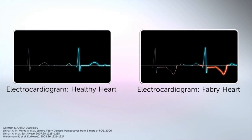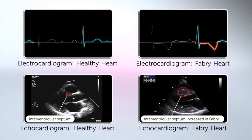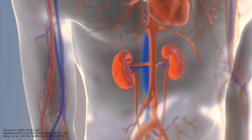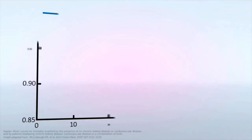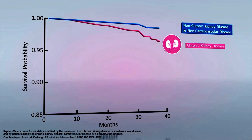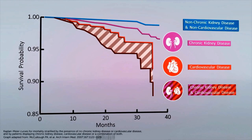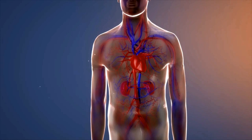Fabry disease also affects the kidneys, as GB3 accumulates in the renal glomerulus, causing progressive deterioration of renal function and ESRD. This in turn impacts cardiovascular risk — it is often cardiovascular complications that are the cause of death in patients with chronic kidney disease. Once reduced GFR is detected, Fabry patients are likely to already have significant cardiovascular abnormalities. Understanding these complex and interlinked disease manifestations is central to improving outcomes for patients with Fabry disease.